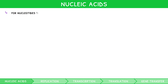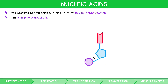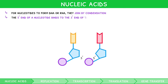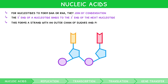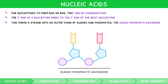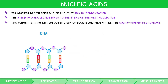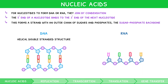For nucleotides to form DNA or RNA, they must join by condensation. During this, the five-prime end of a nucleotide binds to the three-prime end of the next nucleotide. This forms a strand with an outer chain of sugars and phosphates, known as the sugar phosphate backbone. In DNA, this forms a helical, double-stranded structure, whereas in RNA, this forms a linear, single-stranded structure.